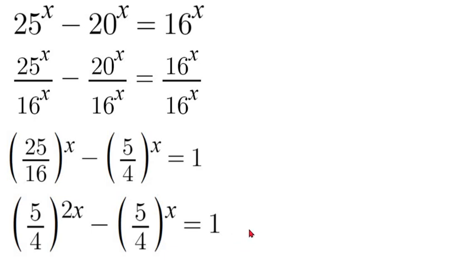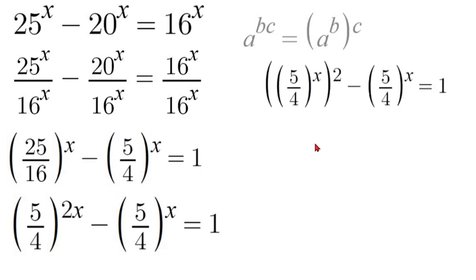Now using exponent properties we can pull out our x value and set 5 over 4 squared all to the power of x. Because if we have two exponents multiplying we can pull one of them out and set that to the power. We'll have 5 over 4 to the power of x squared minus 5 over 4 to the power of x is equal to 1.